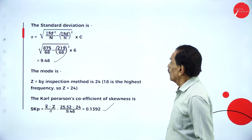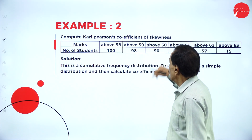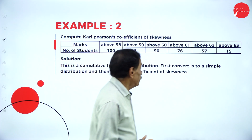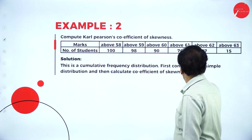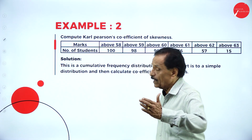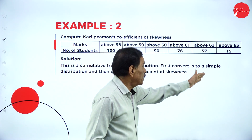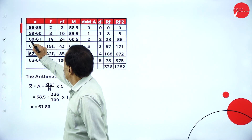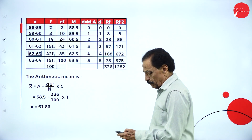We move on to the second problem: compute the Karl Pearson coefficient of skewness. Data given: above 58 is 100 students, above 59 is 98, above 60 is 90, above 61 is 76 - all in diminishing order. Above 58 means class intervals 58-59, 59-60, 60-61, 61-62, 62-63, 63-64. We construct the frequency table accordingly.